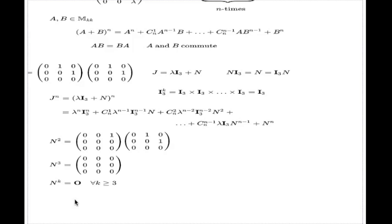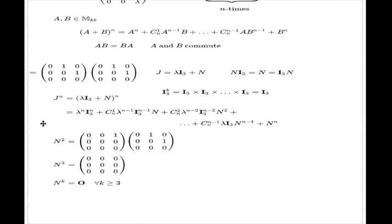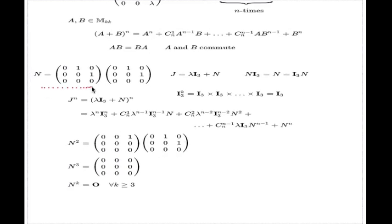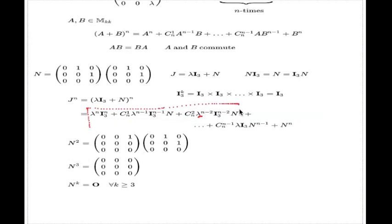It's an interesting phenomenon which exists with matrices. That's why with matrices you have to be very careful — some things are quite different from numbers. With numbers, if you take any non-zero number and keep multiplying it with itself, you will never hit zero. But in the scope of this example it's very helpful to us, because all powers of N except the first and second are zero. So in this binomial expansion, only the first three terms will deliver something — the rest will just vanish.